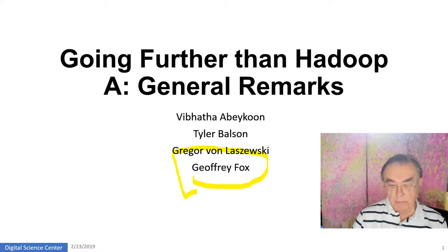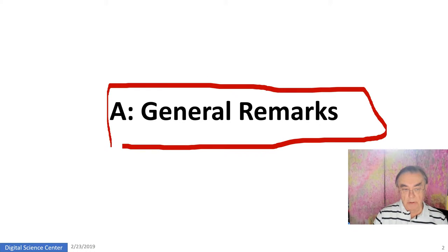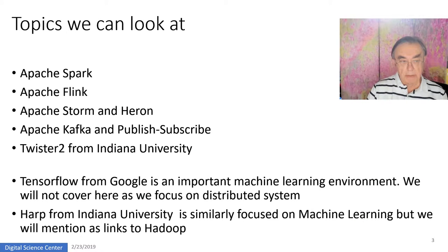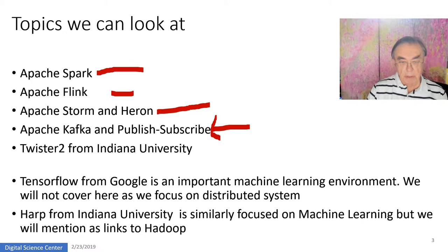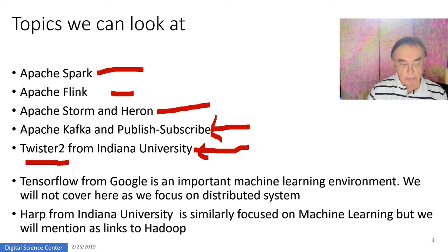We first have some very general comments on the field. These general remarks introduce the Global AI and Modeling Supercomputer, and the general approach of most of industry and implicitly academia today. We can look at Spark, Flink — which is essentially the same as Spark — Storm and Heron, which are almost identical; Kafka and the Publish-Subscribe technology, which includes RabbitMQ, ActiveMQ, and Twister 2. We could also mention TensorFlow, which is a machine learning environment, but this course is really on the distributed systems behind machine learning, not on machine learning. We have a system called HAARP from Indiana University, which has a similar focus on machine learning like TensorFlow, but it explicitly is integrated with Hadoop, so it has some interesting features.